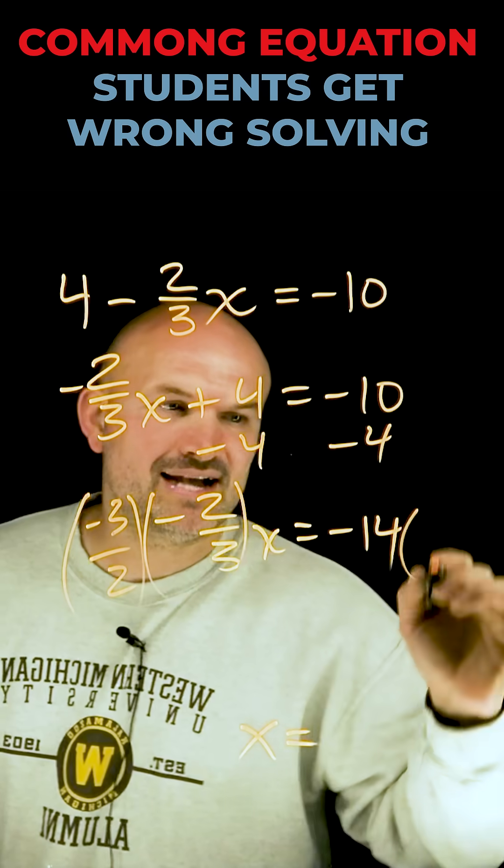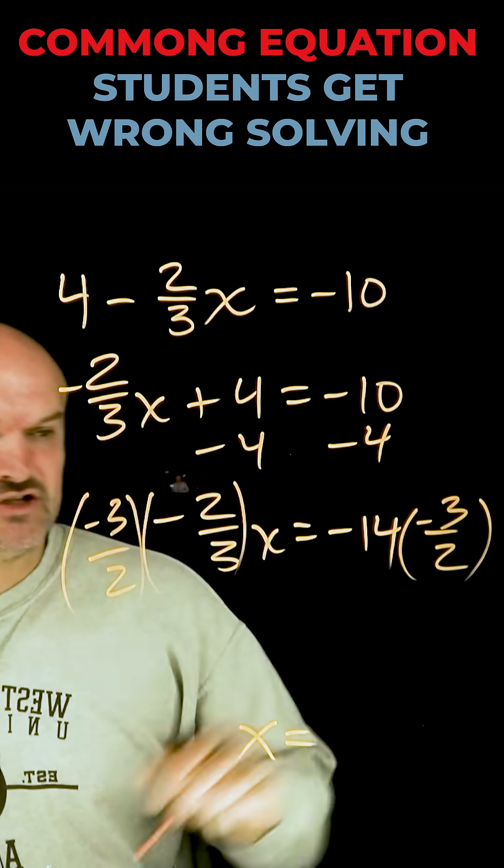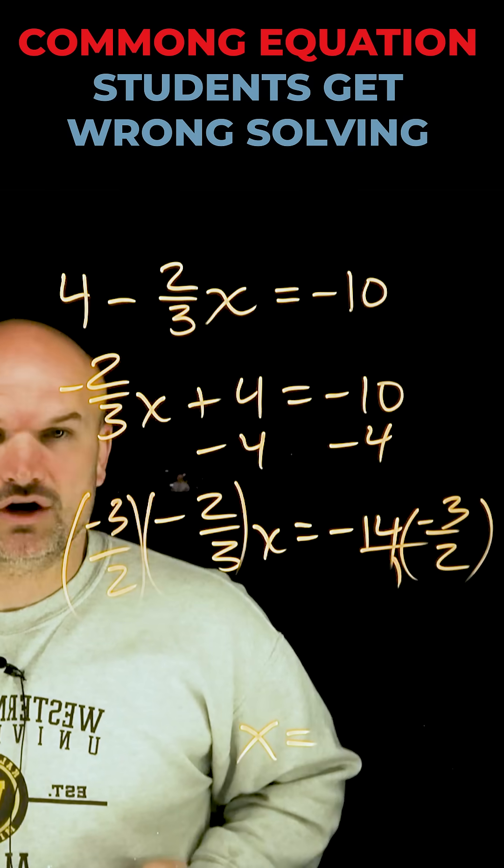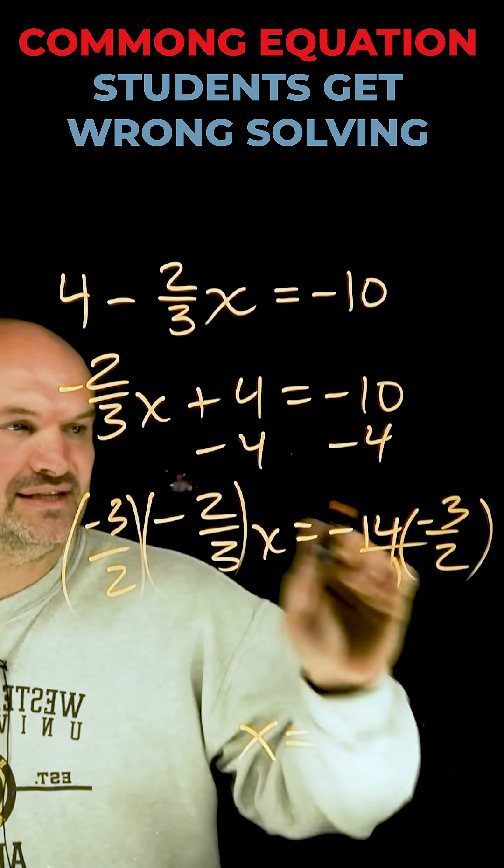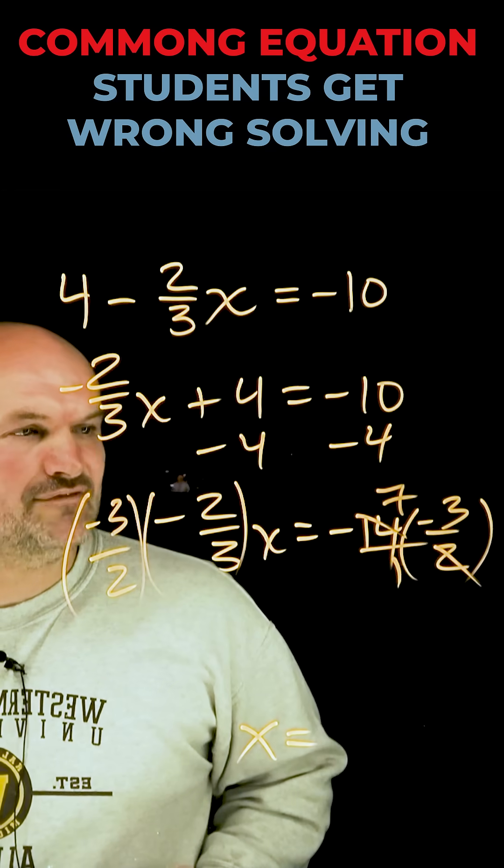Whatever you do on the left-hand side, you're going to do on the right-hand side. The cool thing about multiplying a fraction times an integer is you can always rewrite the integer over 1. Now I can simply divide this 2 into the 14, or it's easier to see that 14 over 2 is just going to be 7.